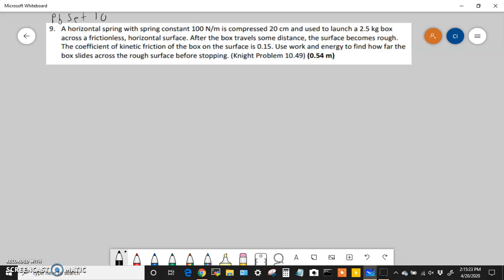Number 9 says: a horizontal spring with spring constant 100 newtons per meter is compressed 20 centimeters and used to launch a 2.5 kilogram box across a frictionless horizontal surface. After the box travels some distance, the surface becomes rough. The coefficient of kinetic friction of the box on the surface is 0.15. Use work and energy to find how far the box slides across the rough surface before stopping.